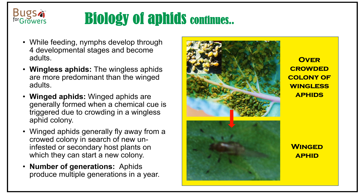As shown here in the photograph on the right hand side, you can see that most of the aphids are wingless. But when their population becomes too crowded, some individuals from the colony will produce wings. These winged aphids will then fly away from the crowded aphid colony and find new hosts where they will start a new colony.